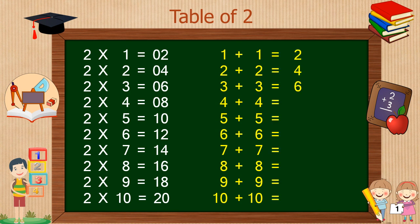Now add the two columns to get the table of 2: 1 plus 1 is 2, 2 plus 2 is 4, 3 plus 3 is 6, 4 plus 4 is 8, 5 plus 5 is 10, 6 plus 6 is 12, 7 plus 7 is 14, 8 plus 8 is 16, 9 plus 9 is 18, and 10 plus 10 is 20. Our table of 2 is ready.